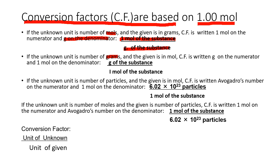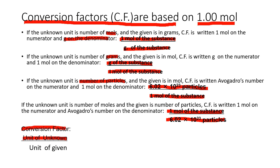If the unknown unit is grams, then grams of the substance is on the numerator of the conversion factor, and one mole is on the denominator. If the unknown unit is the number of particles, then 6.02 times 10 to the 23rd particles is on the numerator over one mole of the substance. If the given is the number of particles, then 6.02 times 10 to the 23rd particles is on the denominator of the conversion factor. Always remember: the unit of the unknown must be written on the numerator, and the unit of the given on the denominator.